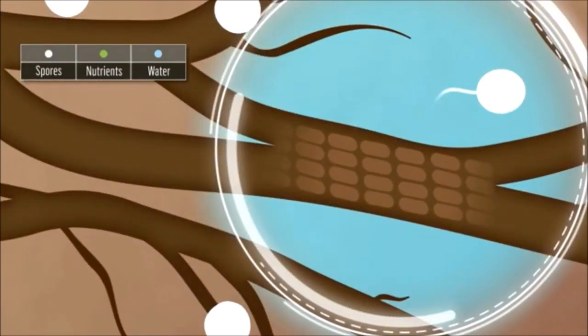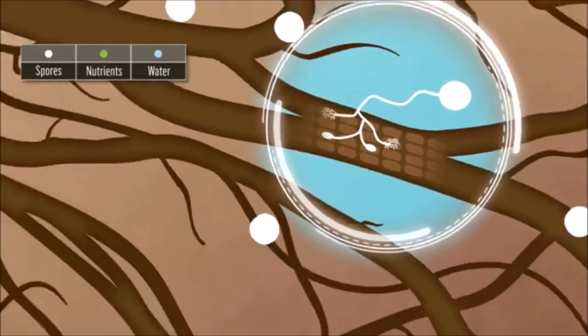Mycorrhizal fungi initially germinate in the soil and make their way to the nearest roots. The roots are then colonized by the fungi and the mycorrhizae are established. The fungi penetrate the root and create an internal network of fungal structures where the plant and mycorrhizae exchange sugars and nutrients.